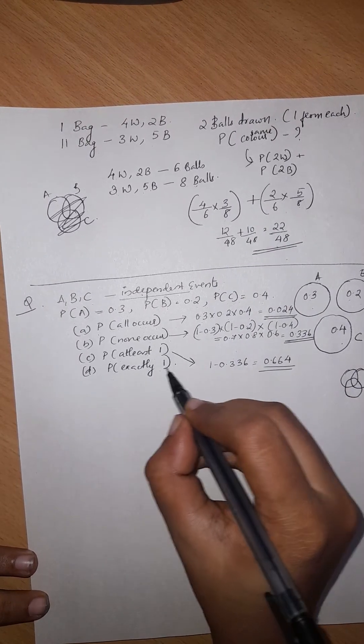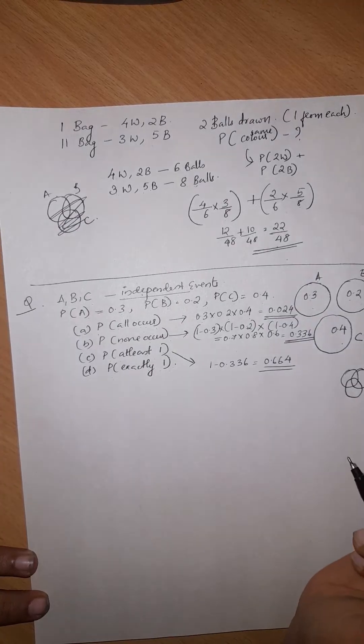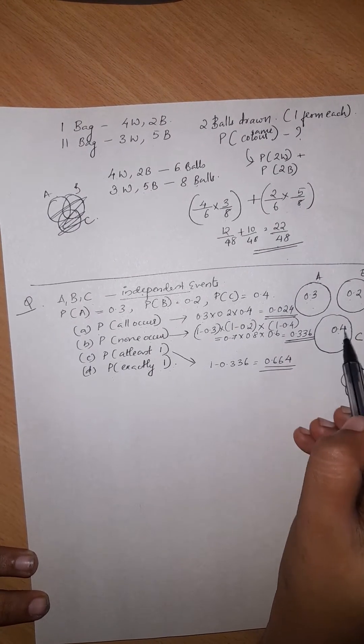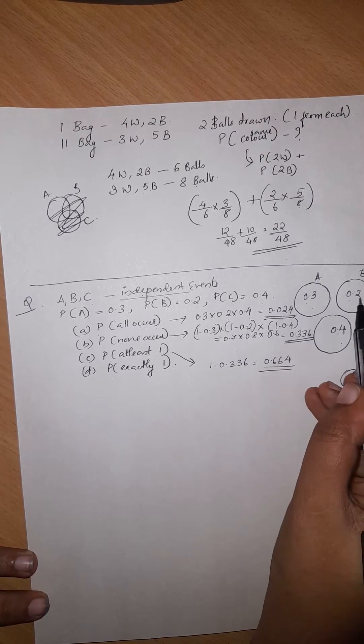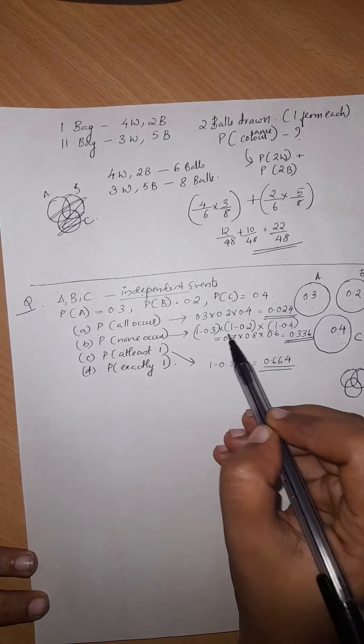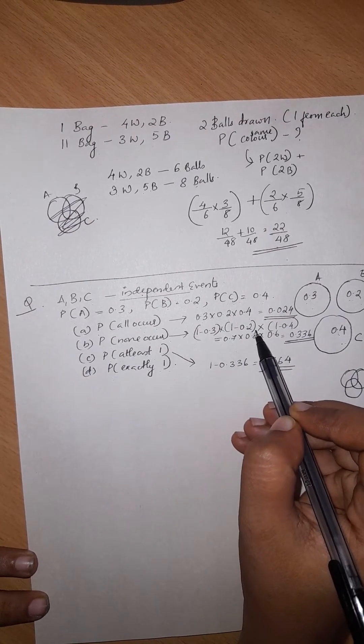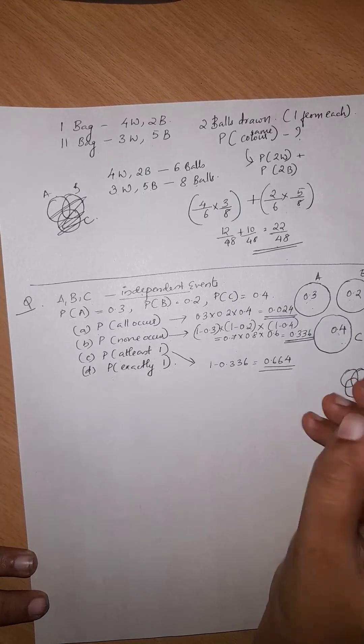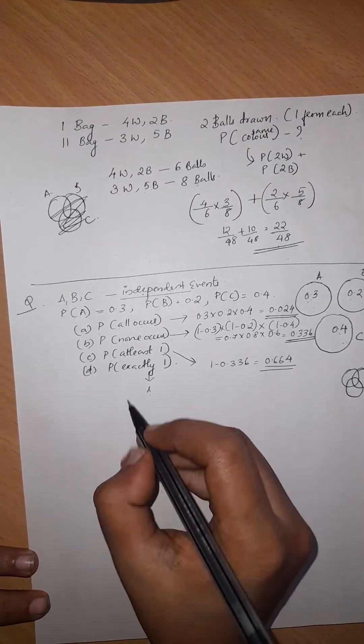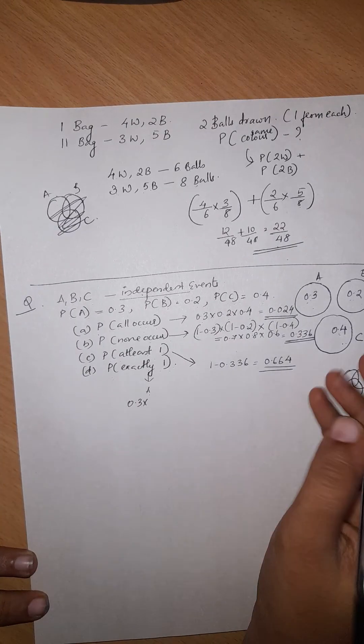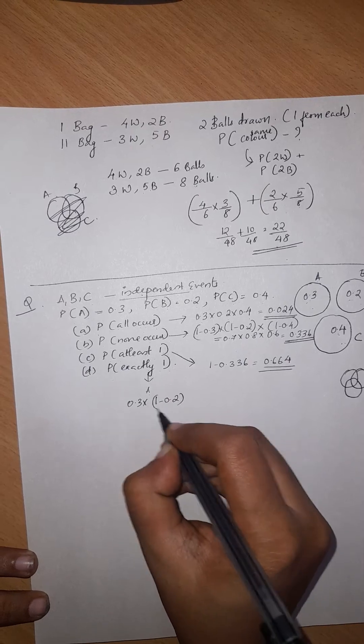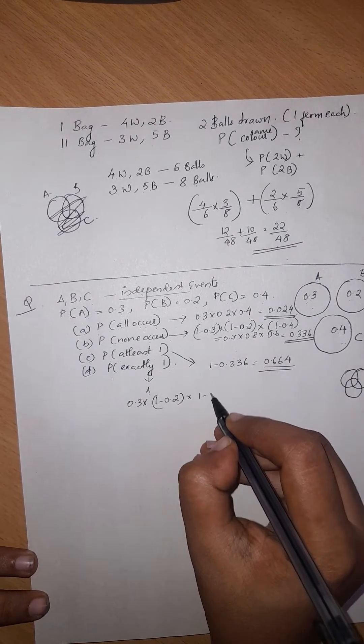This is exactly one occur. This is exactly one occur when A has taken place and B, C not. If A is the case, if B is not the case, if C is not the case, at least we get exactly one occur. A is the case: 0.3 into, B is not: 1 minus 0.2, C is not: 1 minus 0.4.